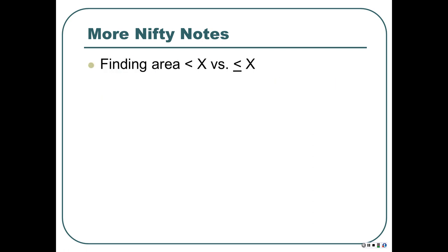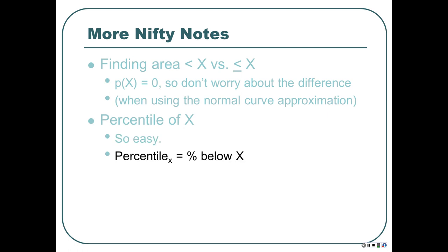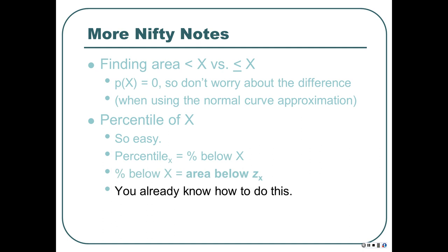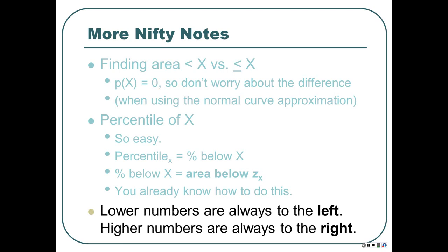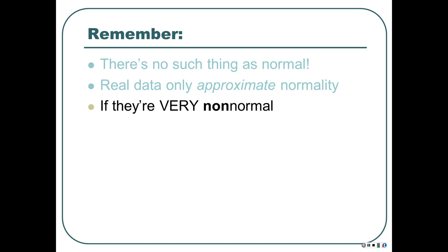Finding area for 'less than' versus 'less than or equal to' — don't worry about it; they're the same when using normal approximations since it's already an approximation. Percentile of x is always the area to the left, always below x, no matter whether x is left or right of the mean. Lower numbers are to the left, higher numbers to the right. Sometimes we say 'beyond the mean' — that means going away from the mean, further away. There's no such thing as truly normal; everything we do is an estimate. If the data are very non-normal, do not use this method.